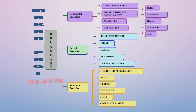Selanjutnya pada American breakfast, juga disajikan fresh fruit and fresh juice, bread, cereal, dan egg dish juga. Yang membedakan American breakfast ini dengan yang lain adalah adanya meat. Di American breakfast selalu disajikan meat, yaitu daging olahan yang bisa digunakan seperti bacon, ham, sosis, dan salami.